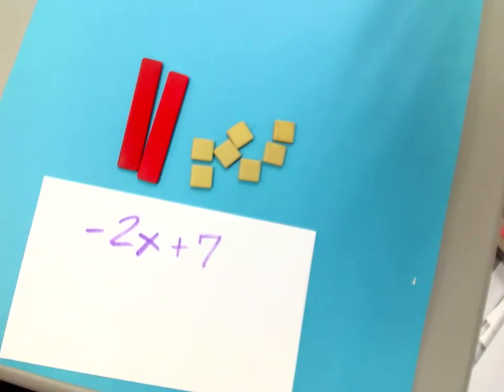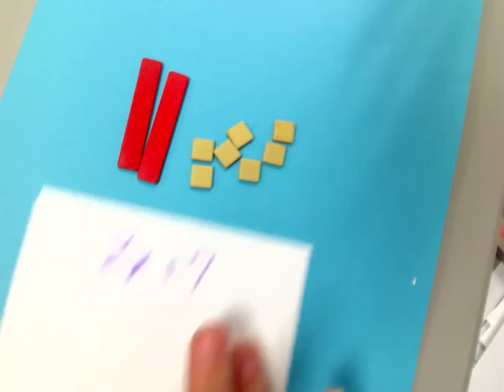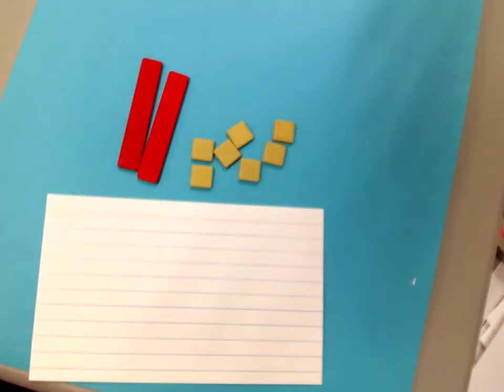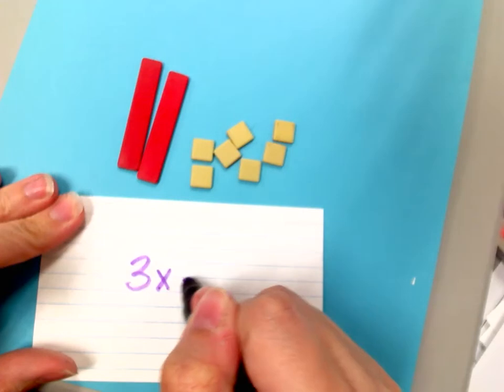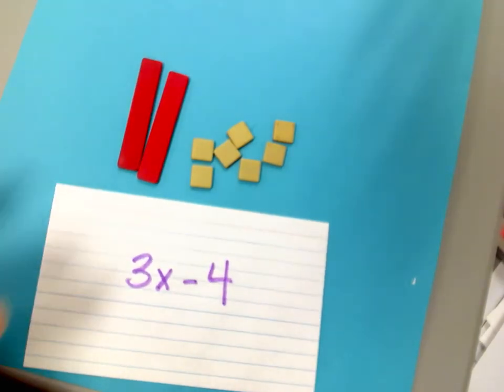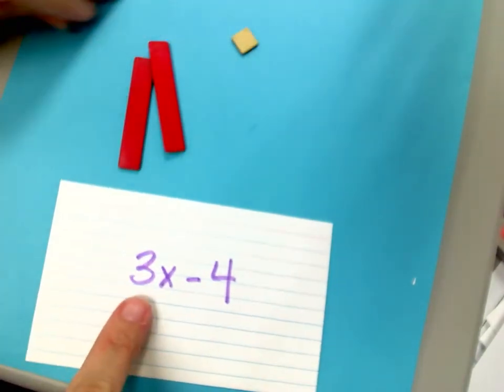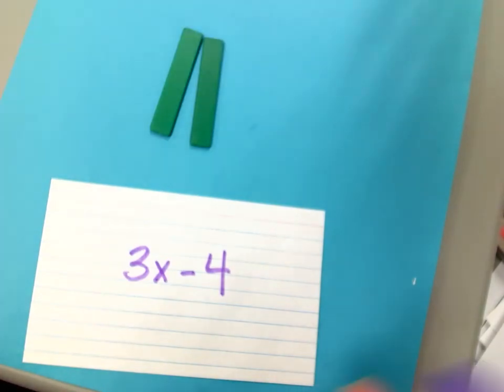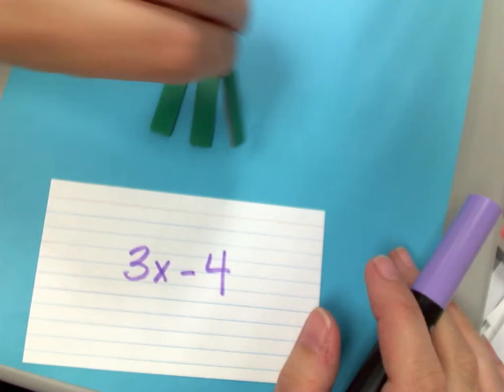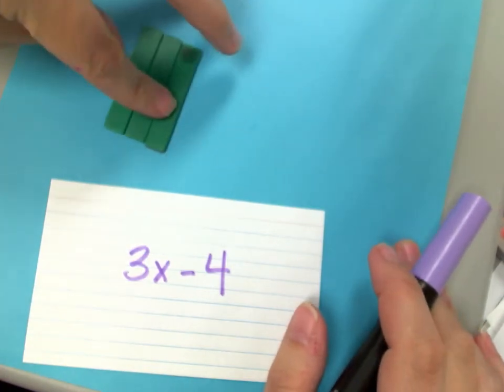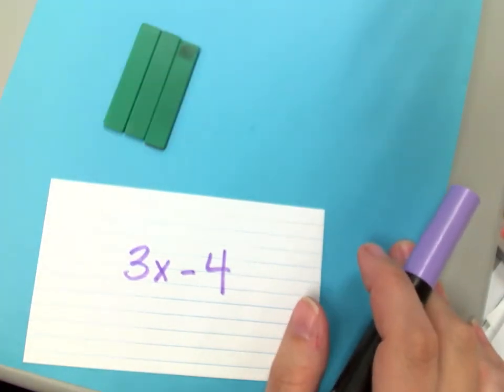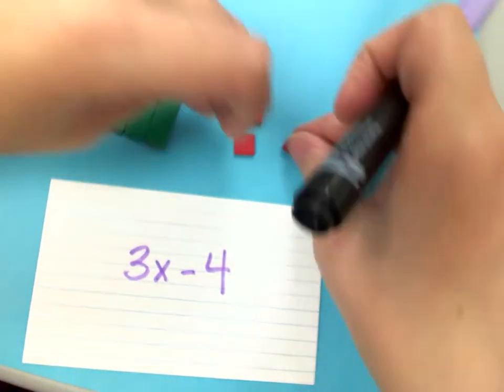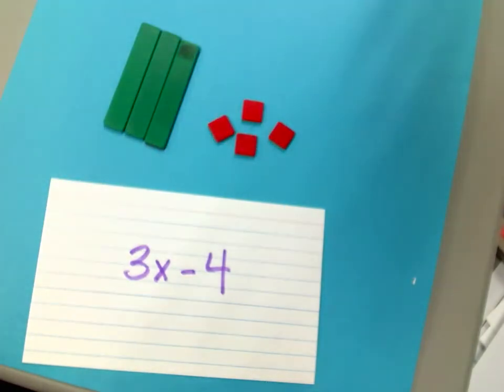Okay, I wonder what it would look like if I said 3x minus 4. How would I show that? Well, I have 3 x's. They're positive because there's no negative sign in front of that x. Again, that doesn't mean that the x value is positive. I have no idea what that x is worth, and I can't solve it because I don't know what the whole expression equals. So I have 3x minus 4. So I'm going to have 4 negatives. So that would be showing me 3x minus 4.